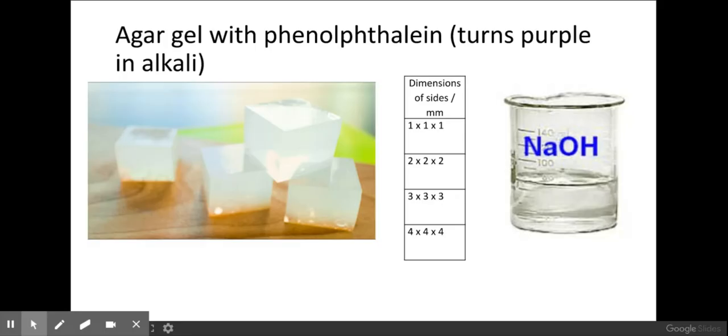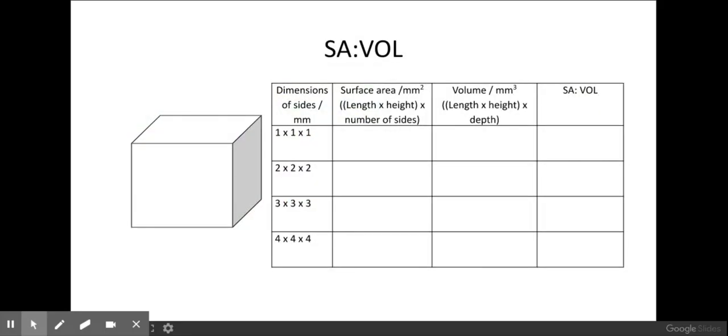Before you actually do this practical you need to work out what the surface area to volume ratio is of these different cubes. If I have a look at my first cube here, if it's one millimeter on every side, to work out the surface area I do my length times my height times the number of sides that I have. So I have six sides to my cube, so here I do one times one times six. For the volume I would do the length times the height times the depth, so in this case one times one times one which is one.